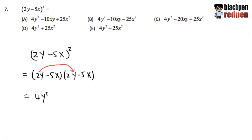Then I will take 2y and multiply with negative 5x. You have to pair this up with both things in the second parentheses — that's how we distribute correctly. 2 times negative 5 is negative 10, and y times x we just write as xy. We write x first because x comes before y alphabetically. So 2y times negative 5x gives us negative 10xy.